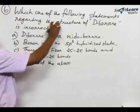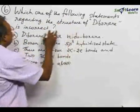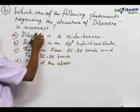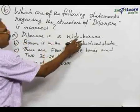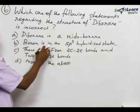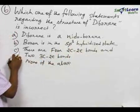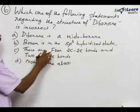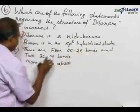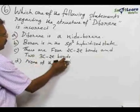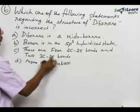Number 6: which one of the following statements regarding the structure of diborane is incorrect? Option A: diborane is a nido-borane. Option B: boron is in the sp³ hybrid state. Option C: there are four two-center two-electron bonds and two three-center two-electron bonds. And option D: none of the above.